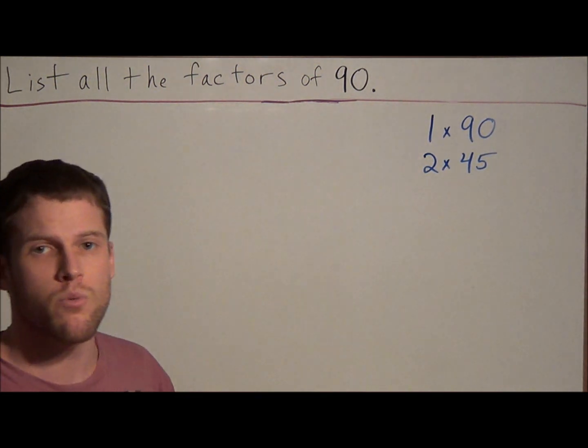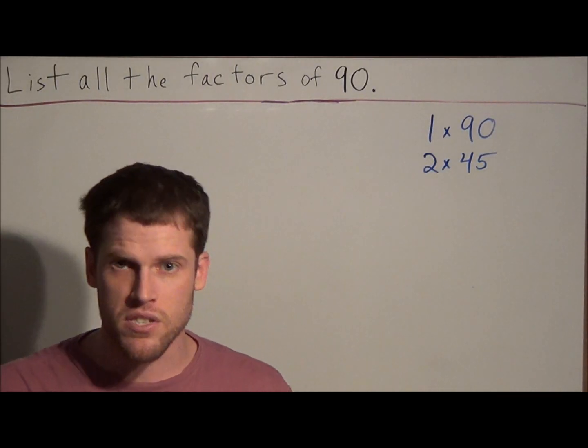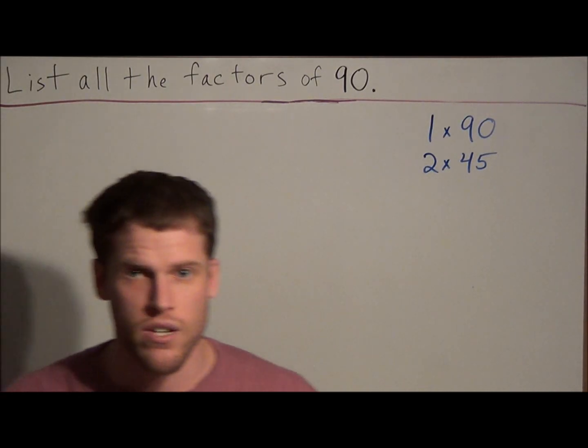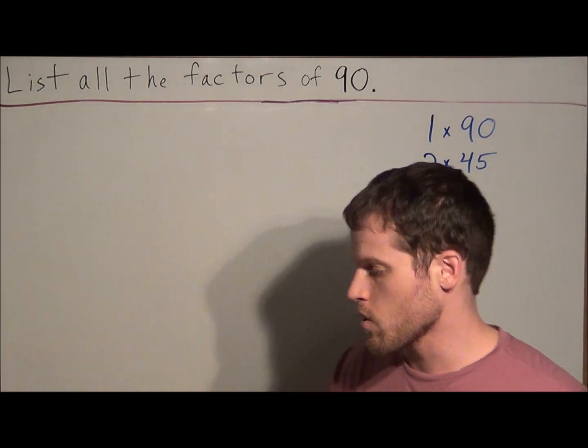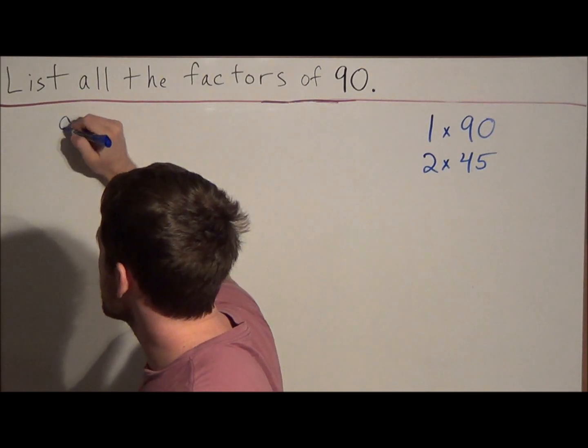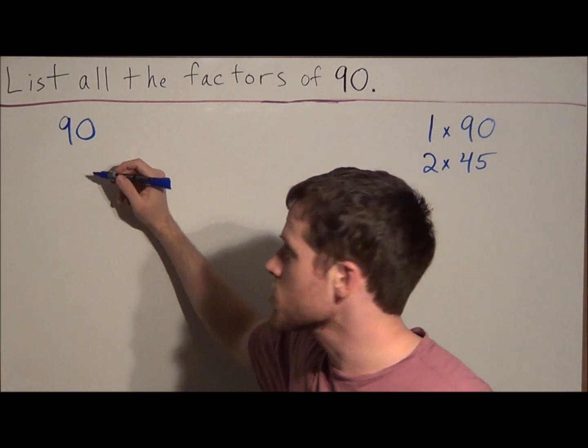But the most common error with these problems is that students have trouble listing all of the factors of 90. That is, they'll miss like one of the sneaky pairs. So the trick that I want to show you today will kind of help you avoid that problem of missing one of the pairs of factors. So the first thing you need to do if you're starting off with 90 is you're going to complete the prime factorization of 90.